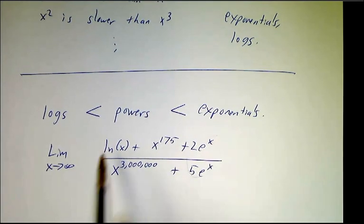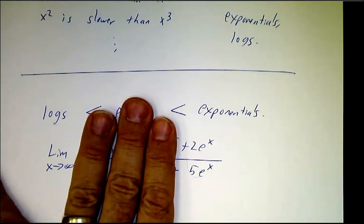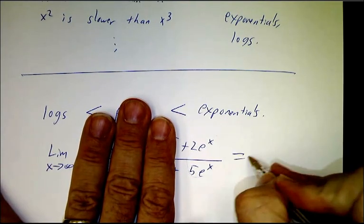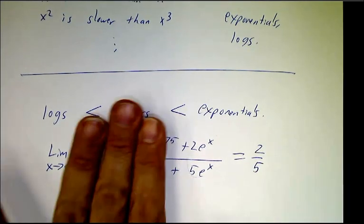Exponentials grow faster than powers, they grow faster than logs. So for purposes of figuring out our limits, it's the biggest terms that have the biggest effect. So this is going to wind up being 2/5.